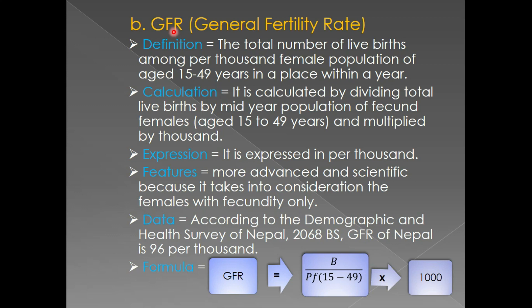Today let's talk about GFR. In short form it is GFR and the full form is General Fertility Rate. Before going to the definition, I would like to focus your attention on the formula. Please look at the formula: GFR, or General Fertility Rate, is equal to B divided by PF (15 to 49), multiplied by 1000. Now please find out the difference between the formula of CBR and the formula of GFR. What is the formula of CBR?